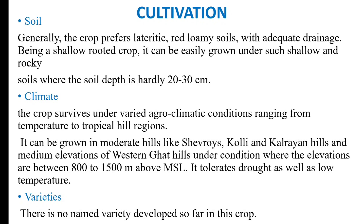Climate: the crop survives under varied agroclimatic conditions ranging from temperate to tropical hill regions. It can be grown in moderate hills like Shevaroy, Coley, and Kalrayan hills, and at medium elevations of Western Ghats hills where the elevation is between 800 to 1500 meters above MSL. It tolerates drought as well as low temperature.